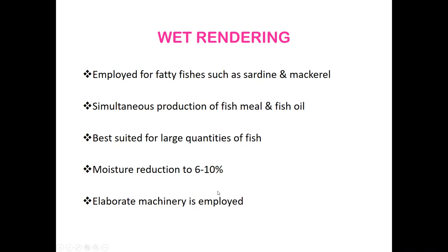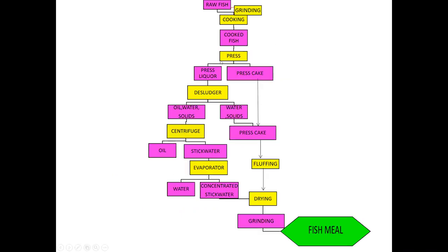This is the flow chart for producing fish meal by the wet reduction method. The raw materials are sardine or mackerel in India. In other countries — Peru uses anchoveta, USA uses menhaden, South Africa uses pilchard and anchoveta, and Norway uses herring and capelin.